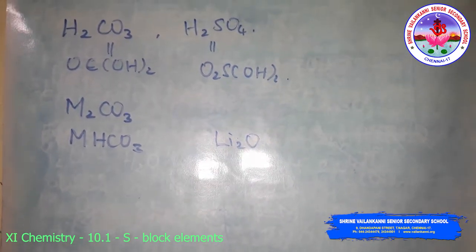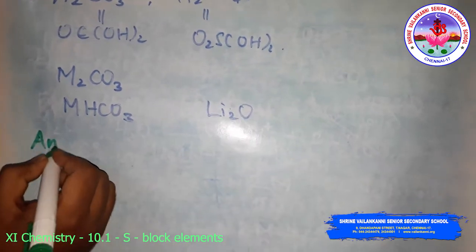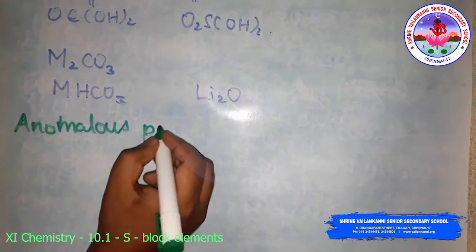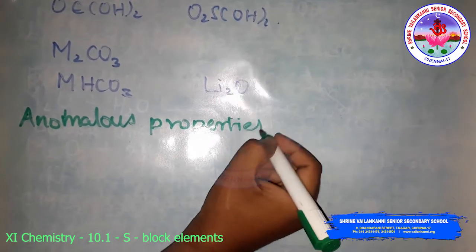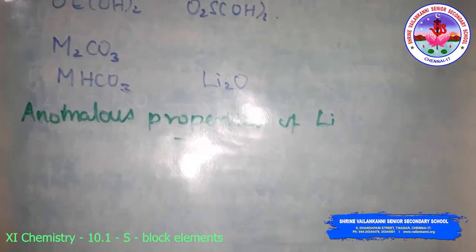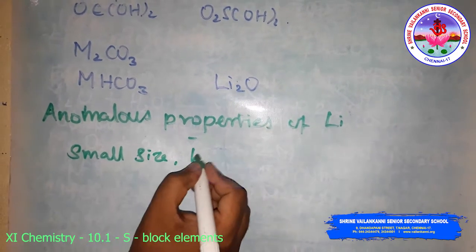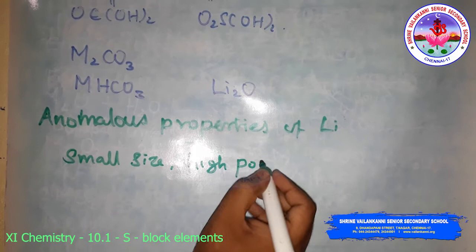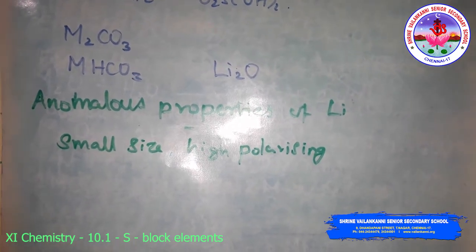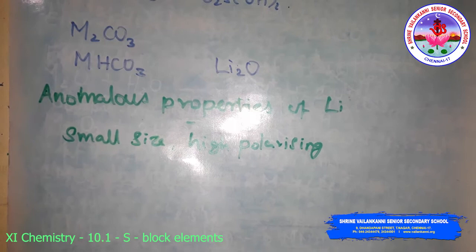Next are the anomalous properties of lithium. Lithium has an exceptionally small size, resulting in small size and high polarizing power. This increases the covalent character of lithium compounds, which is responsible for their solubility in organic solvents.